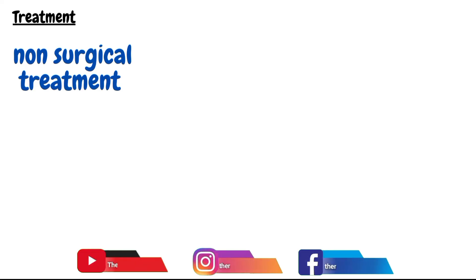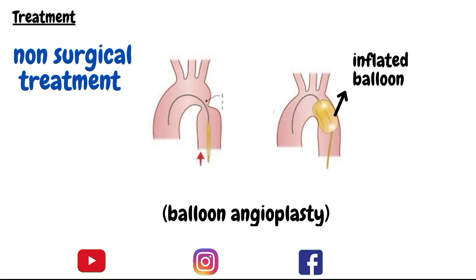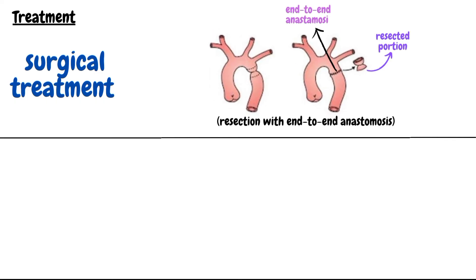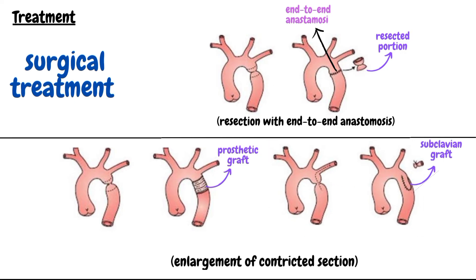Now we will look at the treatment of coarctation of aorta. The non-surgical treatment is balloon angioplasty, performed with the help of cardiac catheterization, where a small balloon is inflated at the site of coarctation to widen the artery. Surgical treatment is the treatment of choice for infants younger than six months and for patients with long segment stenosis, and may be performed for all patients. Repair is by resection of the coarcted part with end-to-end anastomosis of the aorta, or enlargement of the constricted section using a graft of prosthetic material or a portion of the left subclavian artery.